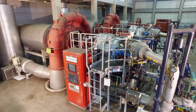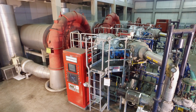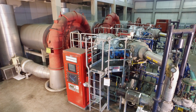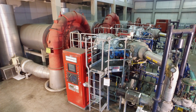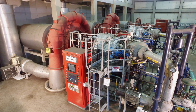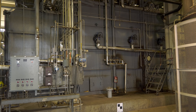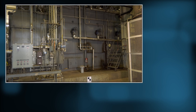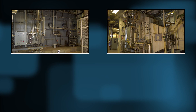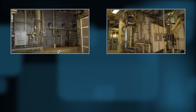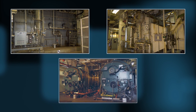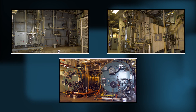Steam for the turbines is supplied by a collection of boilers located in the solids control building. These include a waste heat boiler, co-generation unit boiler, and two auxiliary boilers.